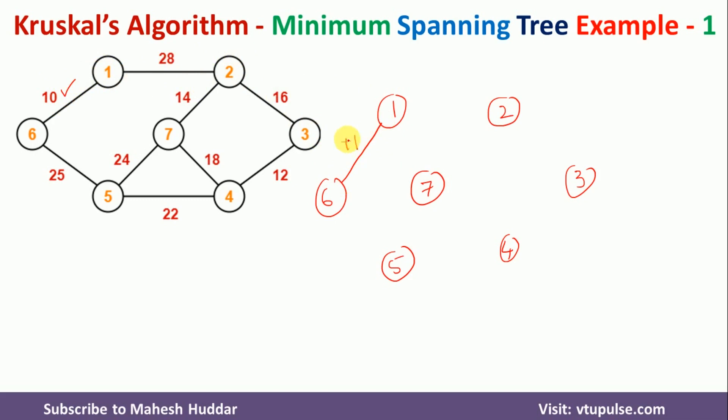Similarly, we will try to find the next edge. If you look at this particular graph, the next edge is between 3 and 4 which is having the weight as 12. So we will draw that particular thing here.